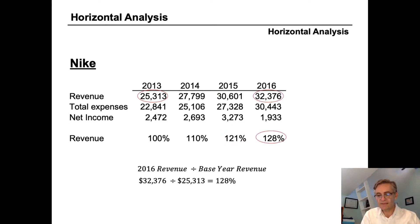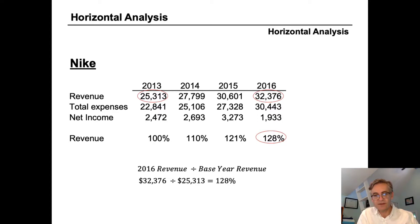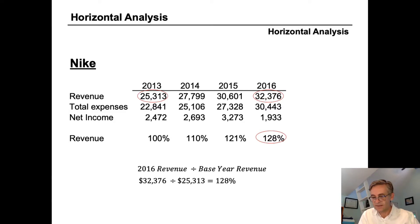If we move on to 2016, it's calculated the same way. The base year is still 2013, and 2016 expressed as a percentage of 2013 is 32.3 divided by the base year amount of 25.3, which gives us 128 percent. We can carry this forward for any number of years and for any line of financial data, including the balance sheet. I recommend you stop the video here and try to calculate the percentages for the next two lines on the slide — total expenses and net income — then resume the video.